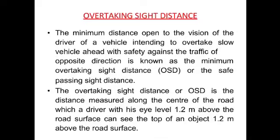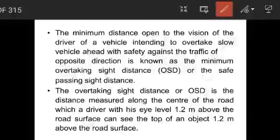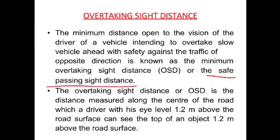Next, overtaking sight distance (OSD). A vehicle intending to overtake a slow-moving vehicle ahead must do so safely against traffic coming from the opposite direction. OSD, also called safe passing sight distance, is the distance measured along the center of the road which a driver with eye level 1.2 meters above the road surface can see the top of an object 1.2 meters above the road surface.